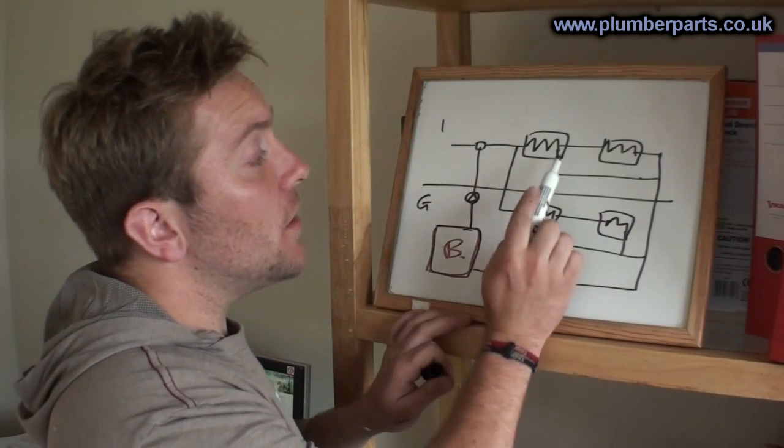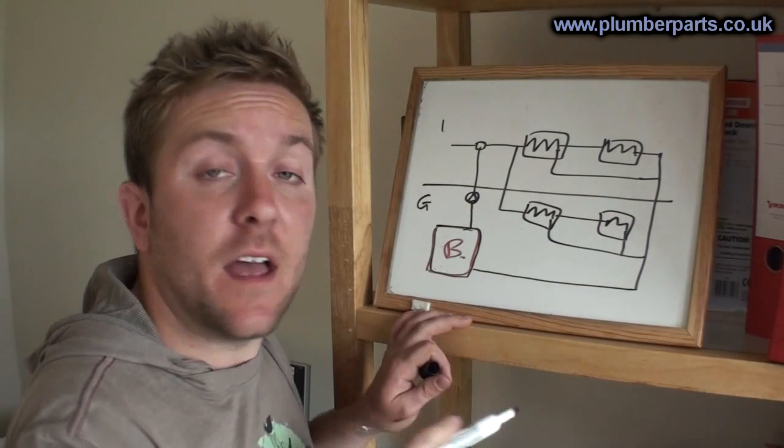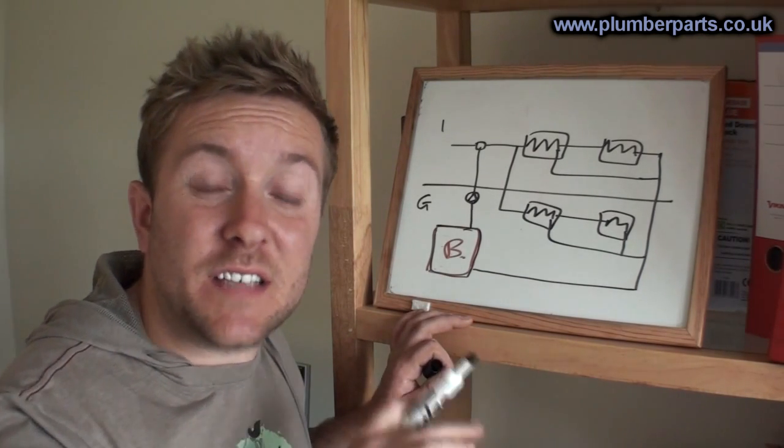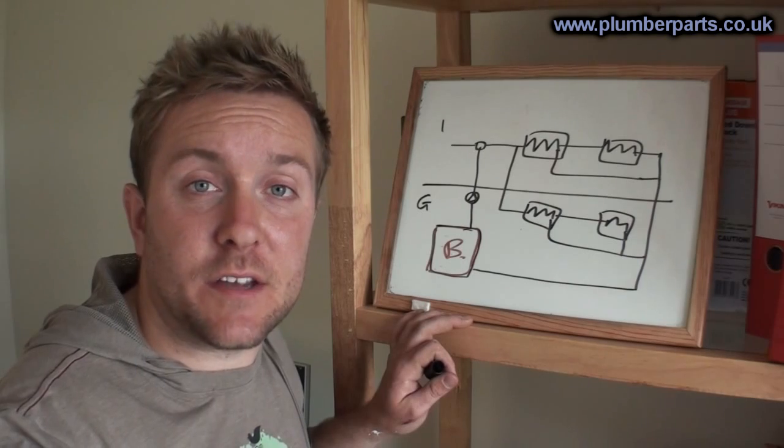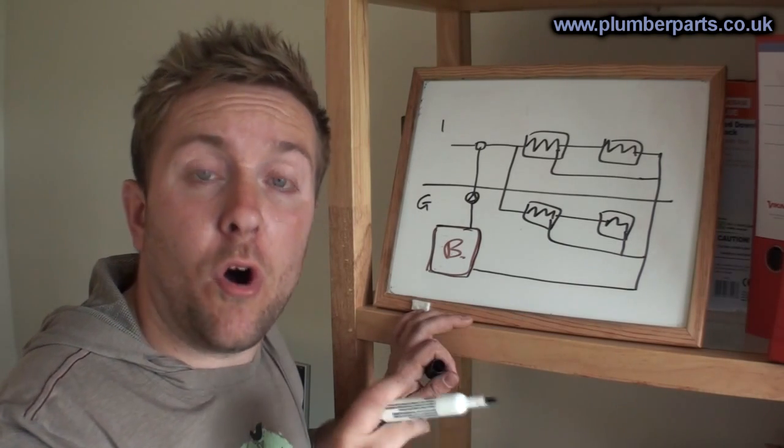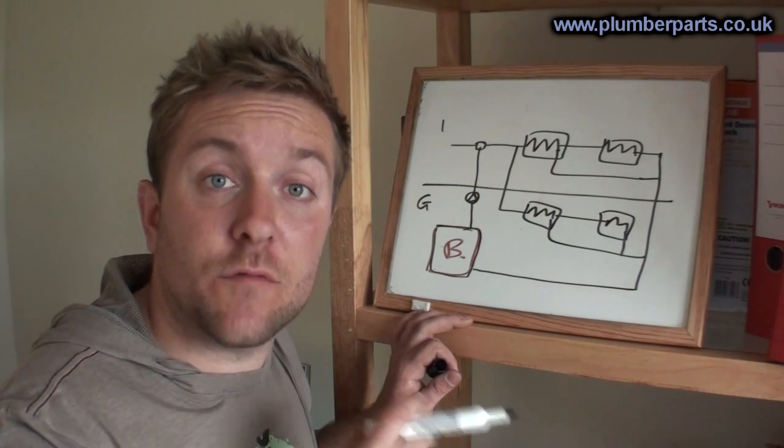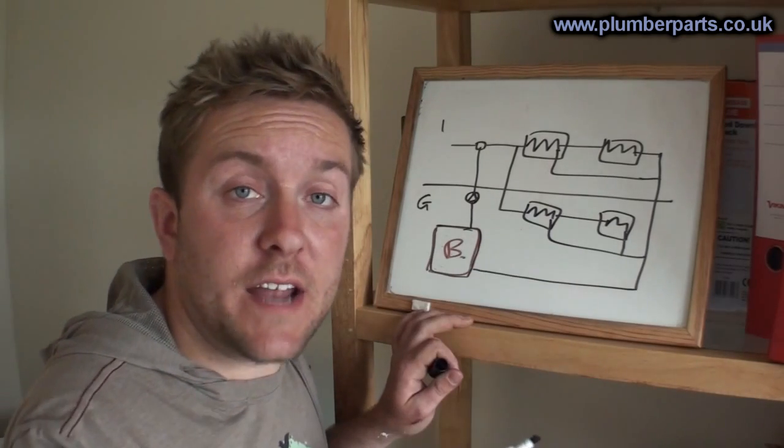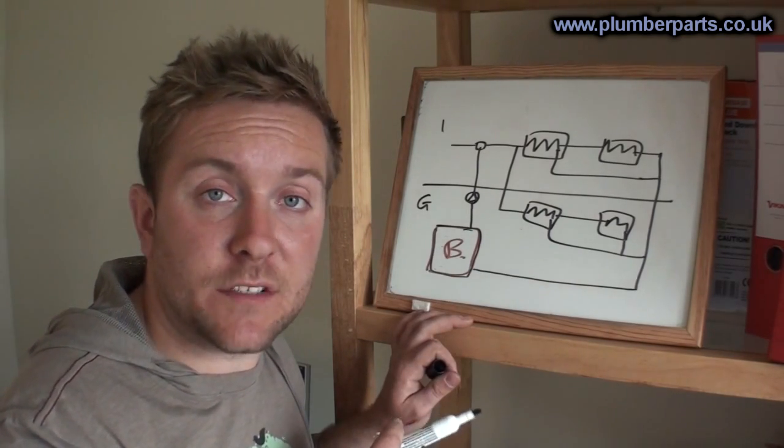So what you should do is go to the lock shield on the radiators upstairs, close them, and then open them about a quarter of a turn. You won't notice any difference in the radiators heat capacity or not, but you will notice that more hot water flow is diverted to the radiators downstairs. Now you go downstairs, make sure those radiators are open, and that means the heating system should be balanced.